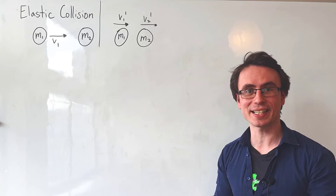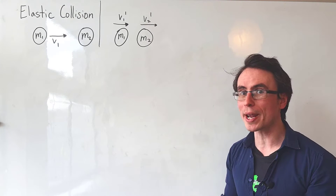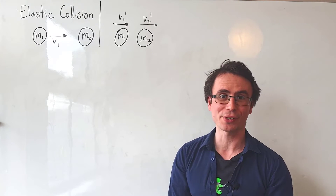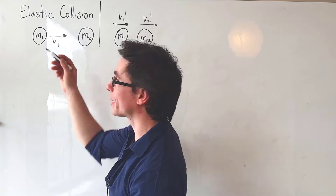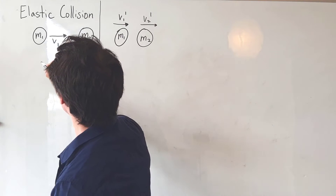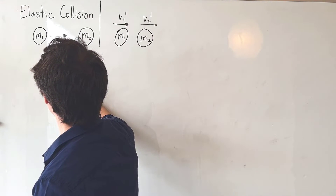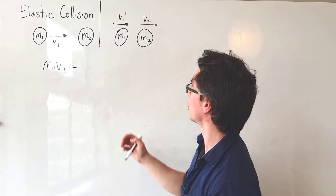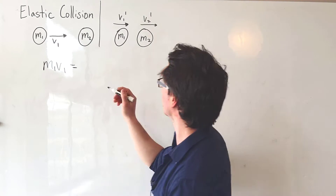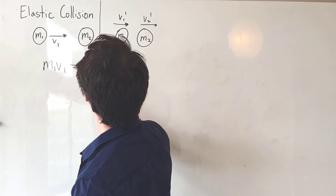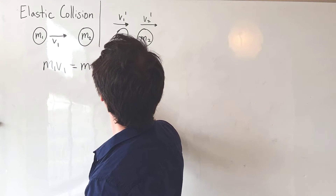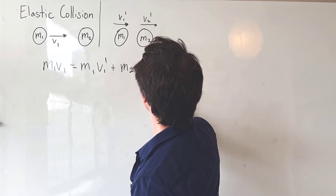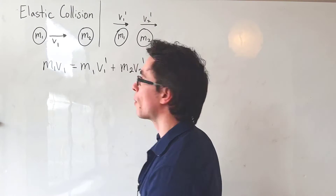Because this is an elastic collision, we can write down the two laws we're going to be working with. Number one: conservation of momentum. Because momentum is conserved, we can say that m1 v1 — that's our momentum before the collision — will be equal to the total momentum after the collision, which is m1 v1 prime plus m2 v2 prime.